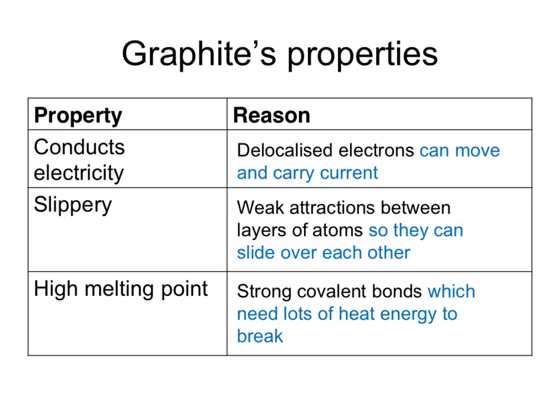Graphite conducts electricity because delocalised electrons can move and carry current through the layers. It's slippery because the weak attractions between layers enable them to slide over each other. It has a high melting point because there are strong covalent bonds within the layers which need a lot of energy to break.